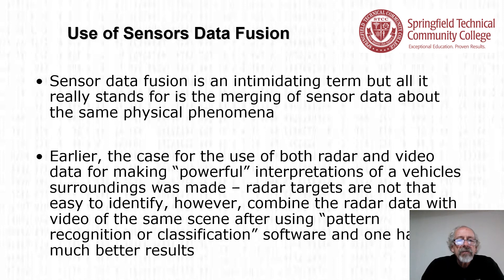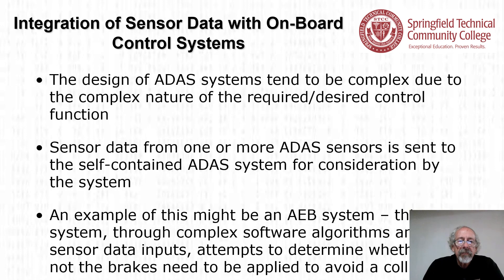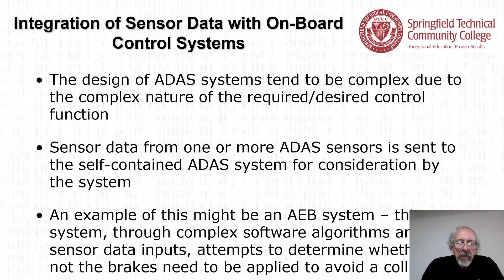Sensor data fusion is a merging of sensor data about the same physical phenomena. The case for using both radar and video data for powerful interpretations of vehicle surroundings is compelling. Radar targets are not that easy to identify, but combining radar data with video of the same scene using pattern recognition or classification software yields much better results. The design of ADAS systems tends to be complex due to the required control function. Sensor data from one or more ADAS sensors is sent to the self-contained ADAS system — for example, the automatic emergency brake system, AEB.